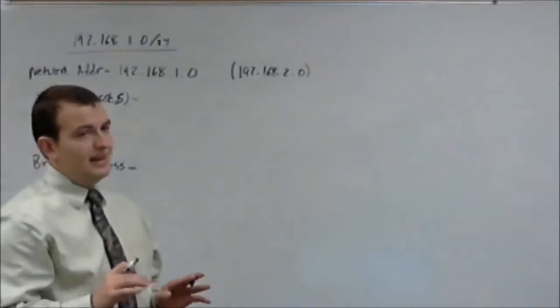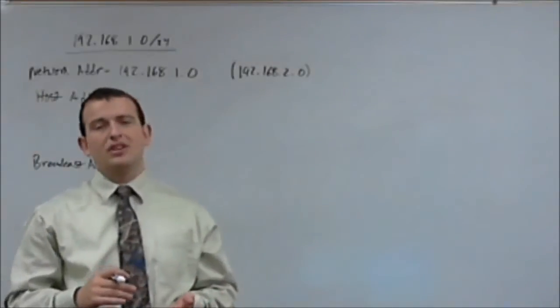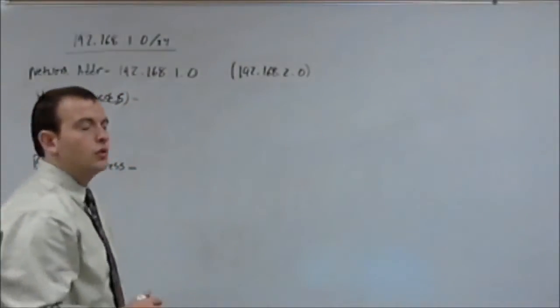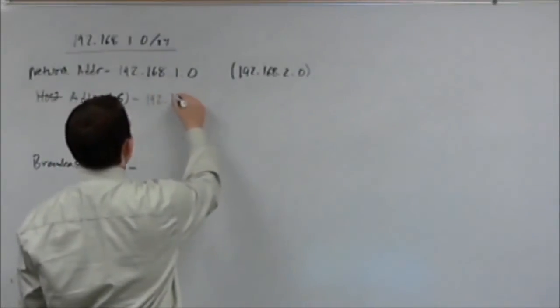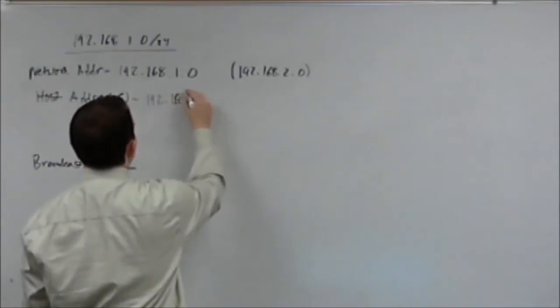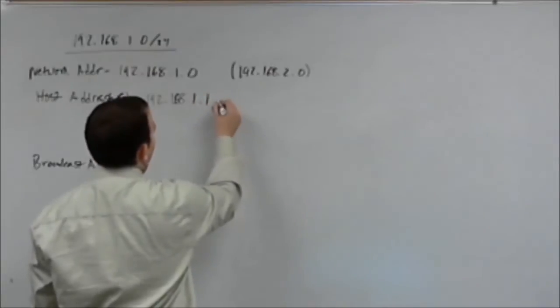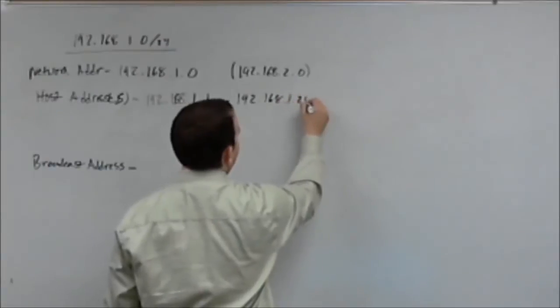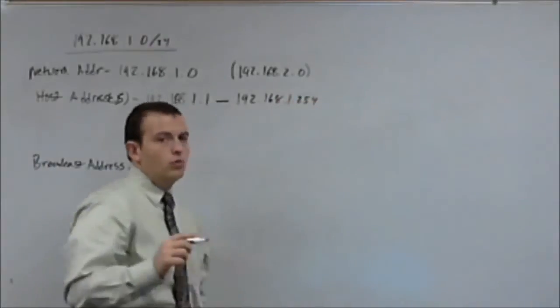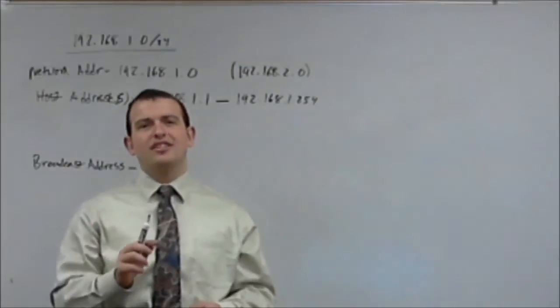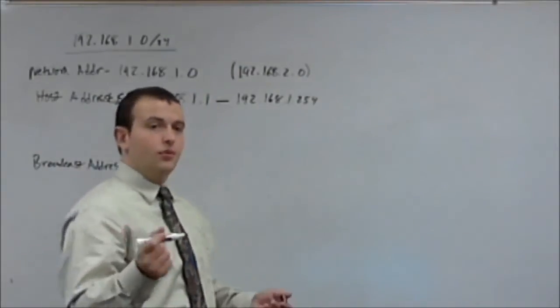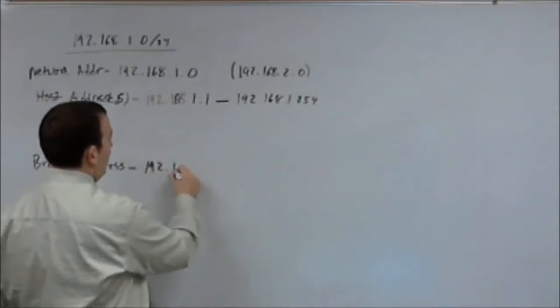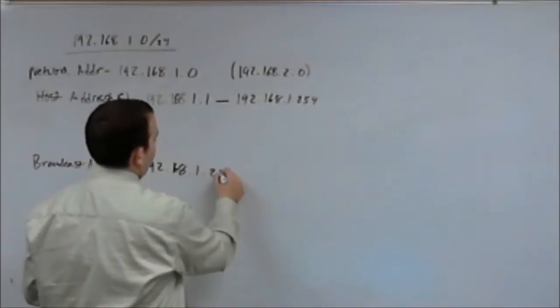Now, the next type of address you need to know in a network is your host address. The host address range on this network would be 192.168.1.1 all the way out to 192.168.1.254. One before the last address in the network. And the reason why is of course the last network address is reserved for your broadcast address which is 192.168.1.255.